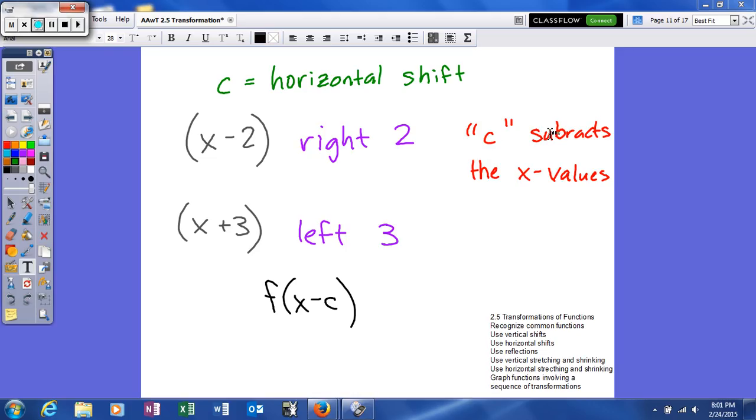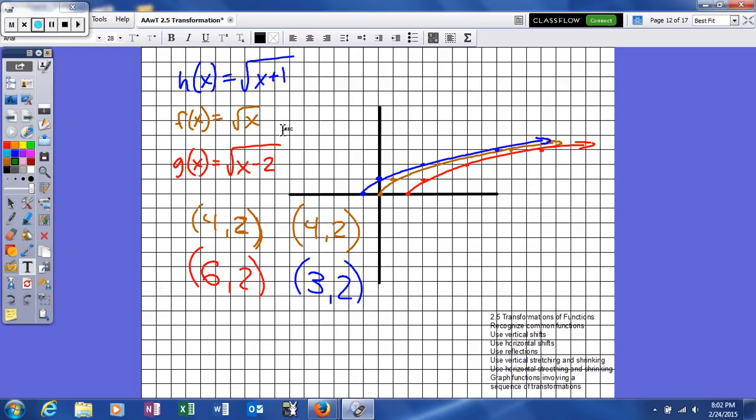And what effect it actually has is c subtracts the x values. And we'll look at a couple examples and see how this applies. So now our parent function is the square root of x, which is our brown function. So if you plug in 0, you get 0. 1, you'll get 1. When you plug in 4, you get 2. When you plug in 9, you'll get 3.